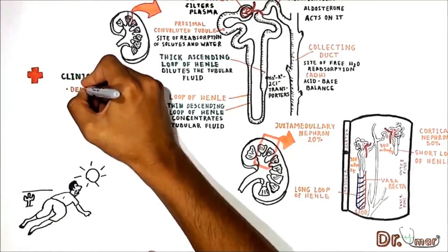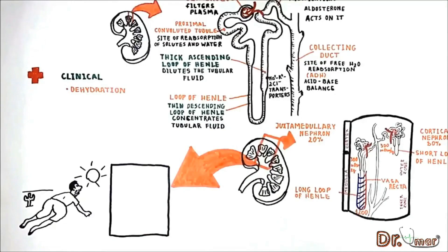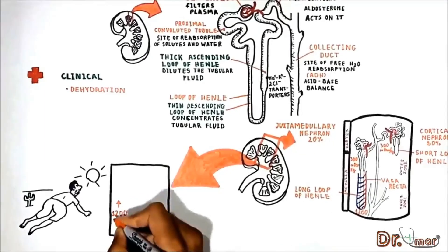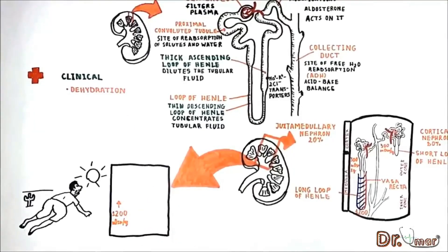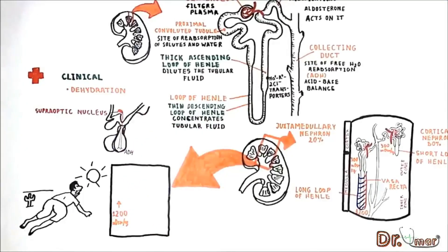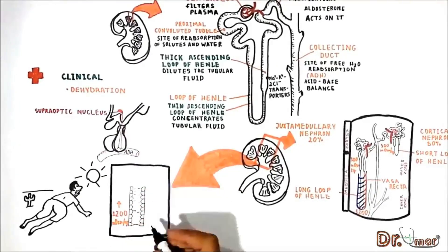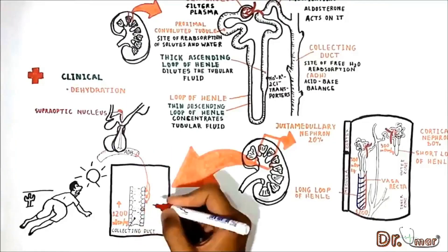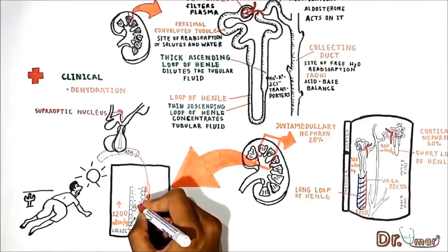When a patient is severely dehydrated, the main job of the kidneys is to retain as much water in the body as possible. Dehydration causes an increase in the osmolar gradient in the deeper portion of the medulla up to 1200 mOsm per kg. Under these circumstances, the supraoptic nucleus and the paraventricular nucleus of the hypothalamus start releasing anti-diuretic hormone through the posterior pituitary into the blood. Anti-diuretic hormone acts on collecting duct cells, which then put aquaporins on their surface, allowing passive reabsorption of water.